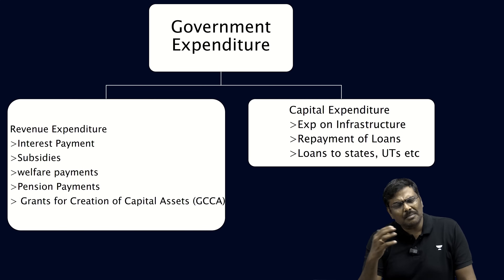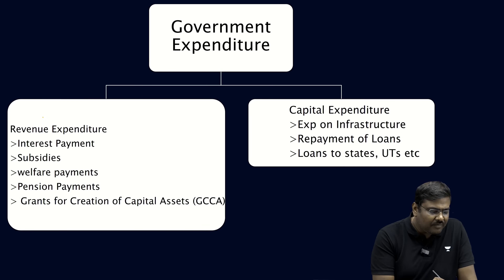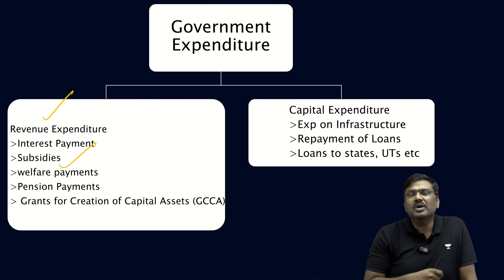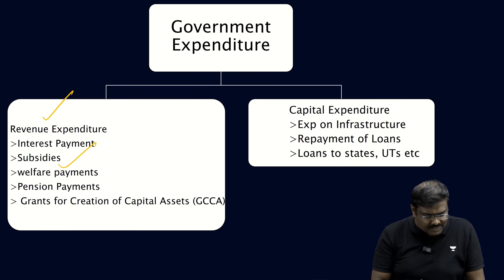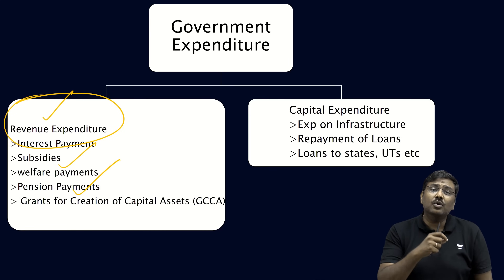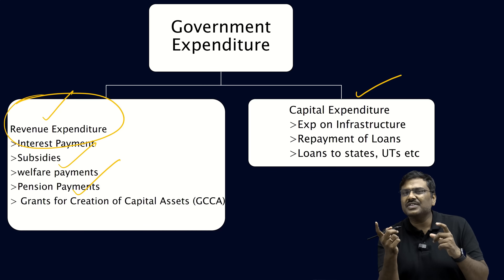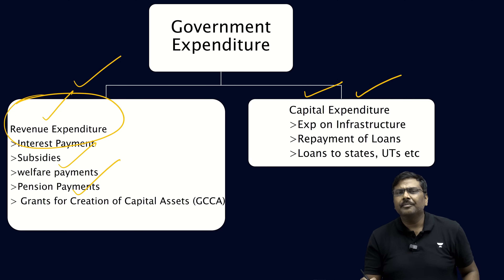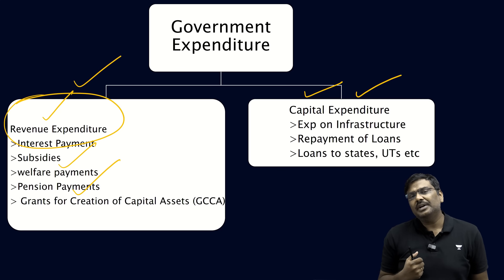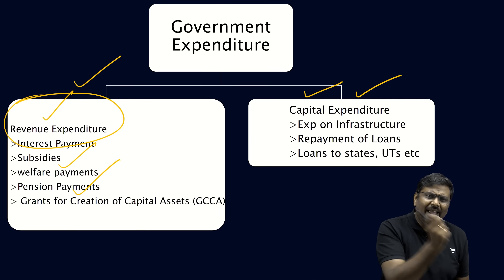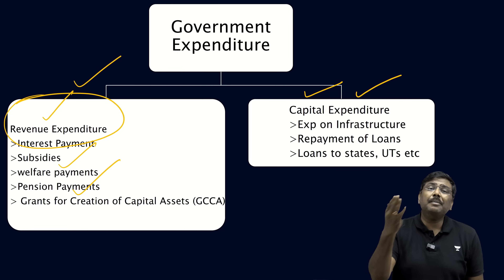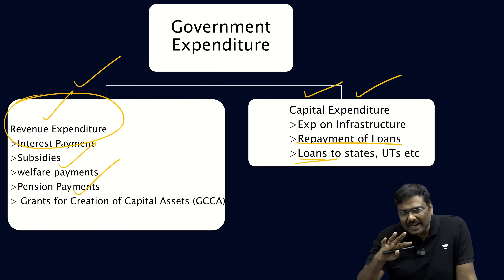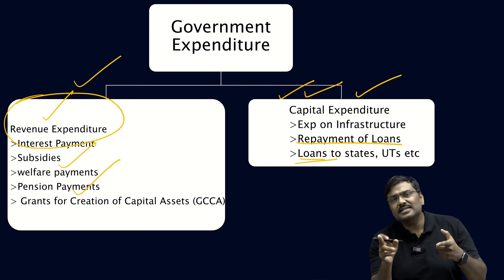On the expenditure side, revenue expenditures include: interest payments on loans taken by the Government of India; subsidies provided for poor people; pensions for the old-age population, etc. Capital expenditure follows the same differentiation — under revenue expenditure, the Government of India is not creating assets and its assets or liabilities are not changing. But if the government provides a loan, that loan becomes an asset; if it constructs an airport, the airport becomes an asset; if it repays loans, the liabilities of the Government of India go down.